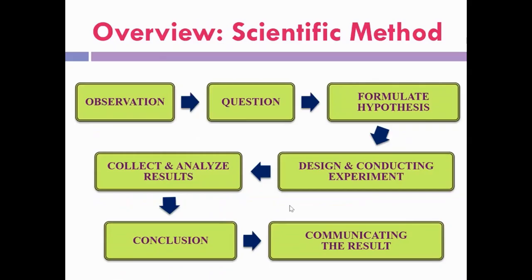Let's go through the previous lesson. In the previous lesson, you learned about the definition of science. Science means a way of thinking and also the method of investigating the natural world in a scientific manner or process. Generally, science means a systematic process in which we organize and quantify knowledge.